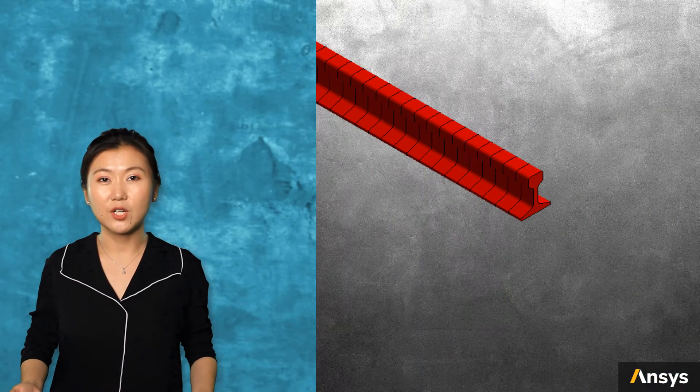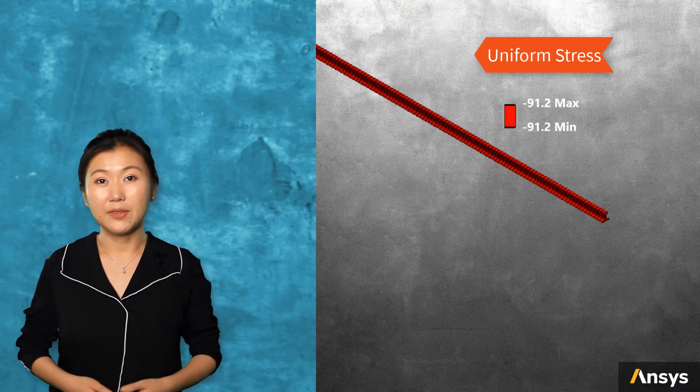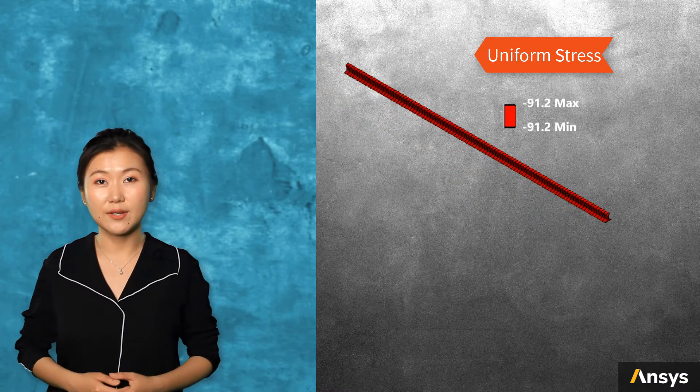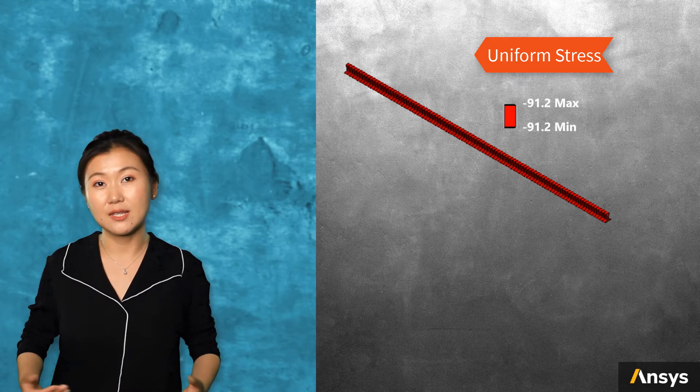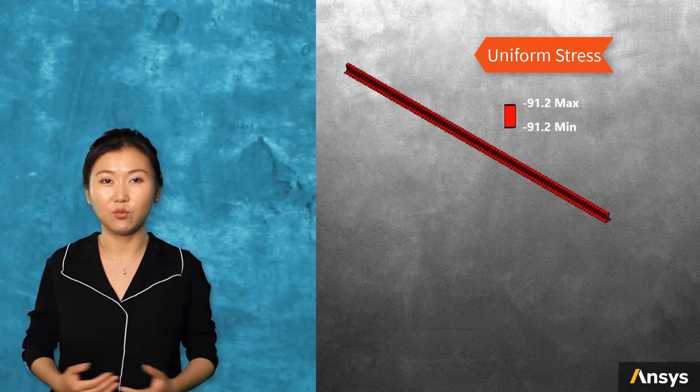After the problem gets solved, we will find that there is uniform stress in the rail. But there will be no deformation or strain in axial direction, because the two ends are fixed. In axial direction, the rail cannot deform.